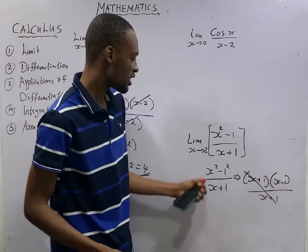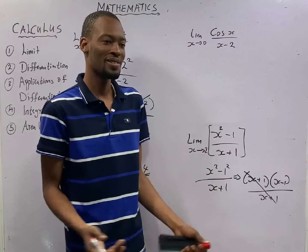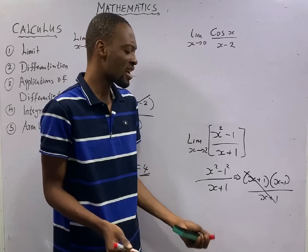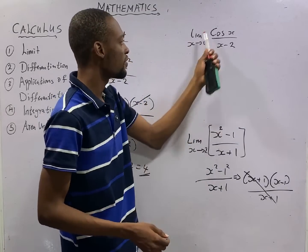And what is s? It tends to 2. If you put 2 here, 2 minus 1, that is 1. Now you have gotten your answer. In any way, you will get 1.